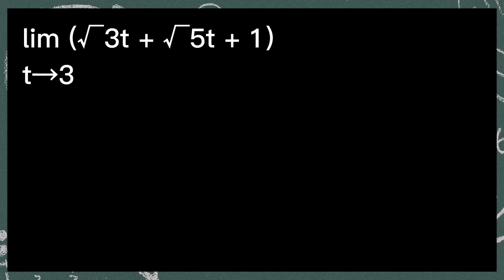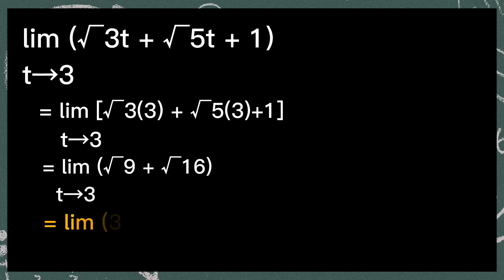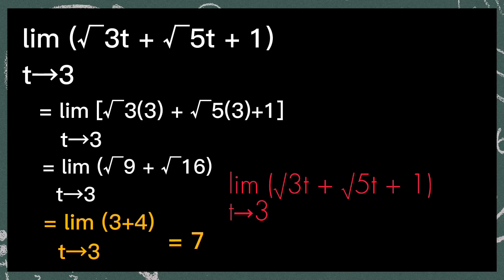The limit of the square root of 3t plus the square root of 5t plus 1, as t approaches 3. So first, substitute the value of t which is 3. So it will be the limit of the square root of 3 times 3 plus the square root of 5 times 3 plus 1. So the square root of 3 times 3 is the square root of 9, and the square root of 5 times 3 plus 1 is the square root of 16. The square root of 9 is 3, and the square root of 16 is 4. So 3 plus 4 is equal to 7. So the limit of the square root of 3t plus the square root of 5t plus 1, as t approaches 3, is equal to 7.